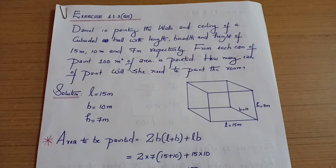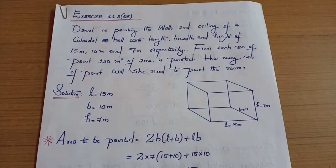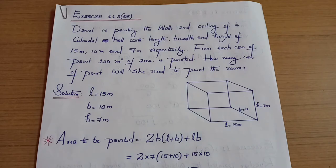Daniel is painting the walls and ceiling of a cuboidal hall with length, breadth and height of 15 meter, 10 meter and 7 meter respectively. The length is 15 meter, breadth is 10 meter, height is 7 meter. From each can of paint, 100 meter squared of area is painted.